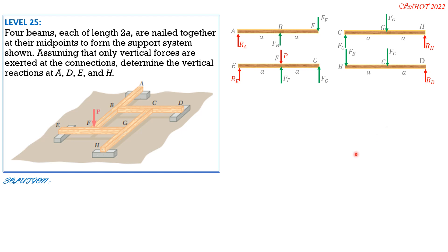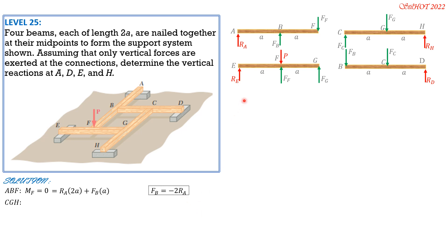Beginning with beam ABF: setting moment at F equal to zero, clockwise positive: R_A times 2A plus F_B times A equals zero, so F_B equals negative 2R_A. Proceeding to beam CGH: setting moment at C equal to zero, counterclockwise positive: R_H times 2A minus F_G times A equals zero, so F_G equals 2R_H.